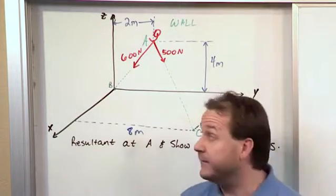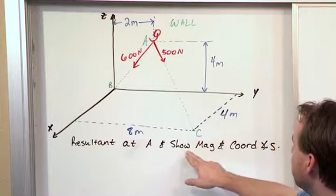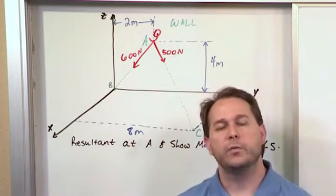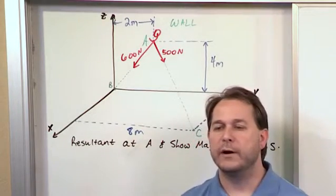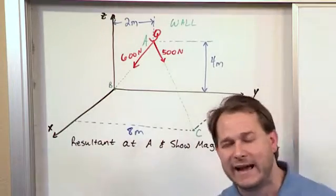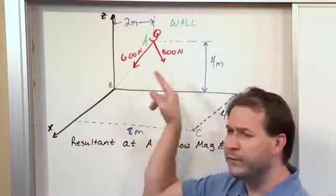And furthermore, it says here that we want to find the resultant at A. And we want to show the magnitude and the coordinate angles of the resultant vector. So we want to know what is the magnitude of the force acting at A. And we want to know how it's oriented in three dimensional space. What are the angles to the x-axis, the angle to the y-axis, the angle to the z-axis after we found the resultant.